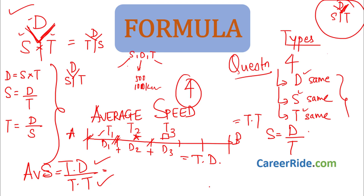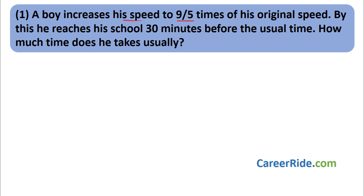Question 1: A boy increases his speed to 9/5 times his original speed. By doing this, he reaches his school 30 minutes before the usual time. How much time does he usually take? Let us identify the type. Is speed the same? No — the boy increases his speed. Is time the same? No — he reaches 30 minutes earlier. So is distance the same? Yes, because in both cases the boy travels from home to school.